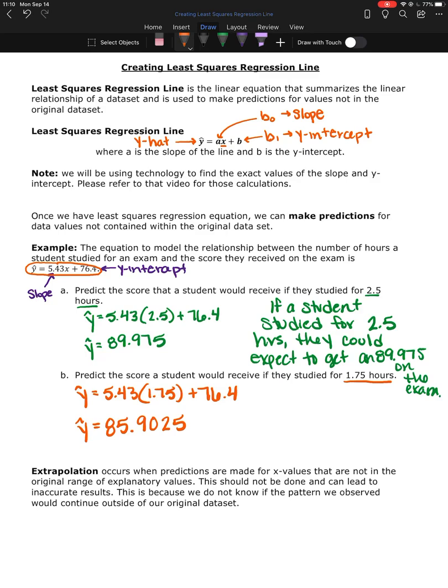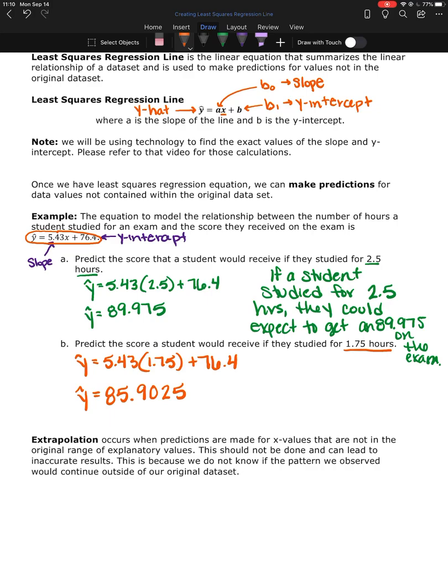There's something called extrapolation. And that occurs when you're making predictions for x values that are not within the original range of data values you were looking at. So if we have here with this data set, let's say our original data set contained people that studied for 0 hours all the way up to 4 hours. We would not want to predict the score for somebody who studied 6 hours. Because 6 hours is outside of that range of 0 to 4.